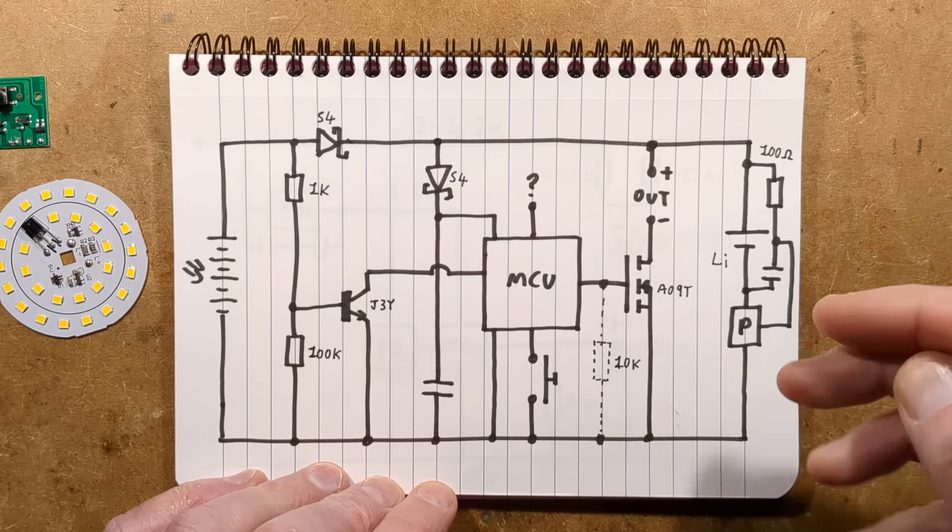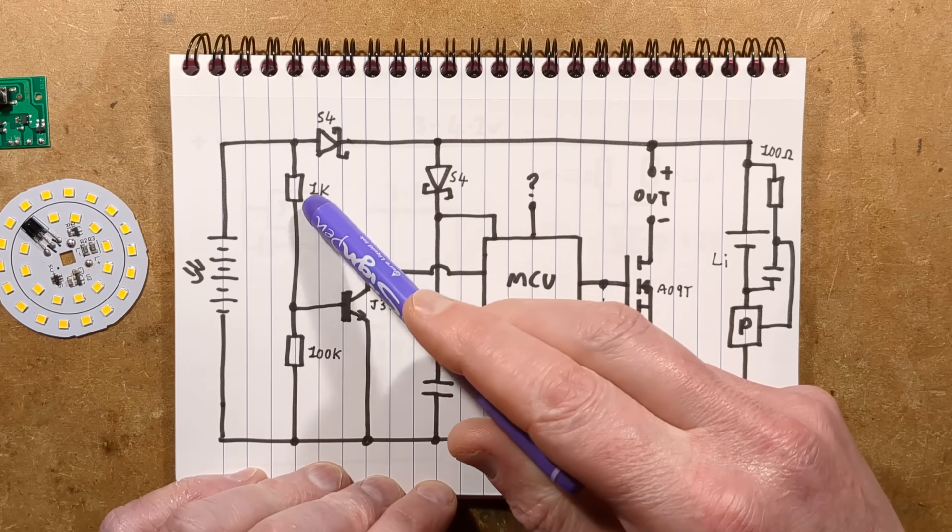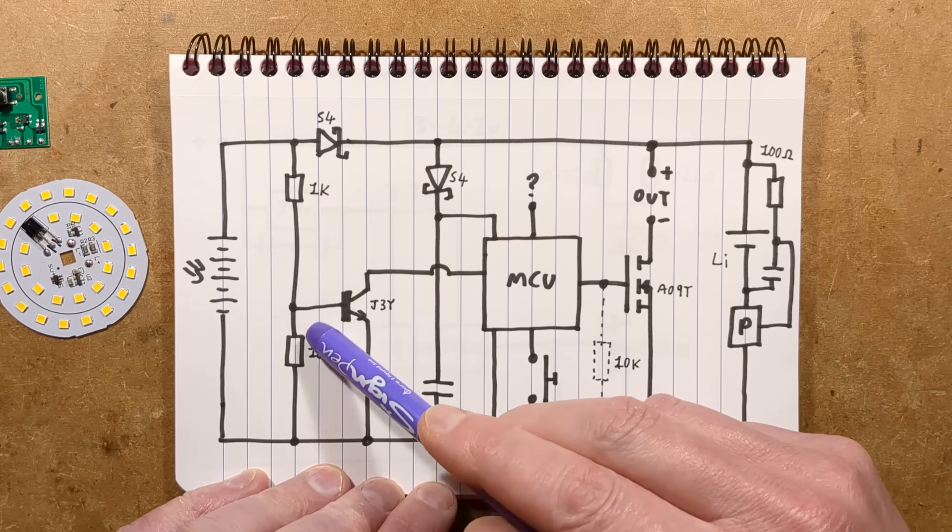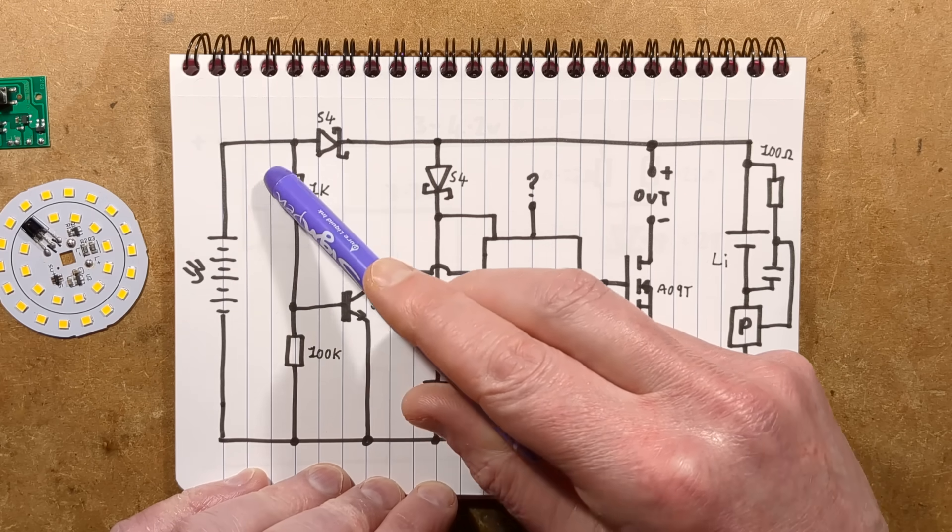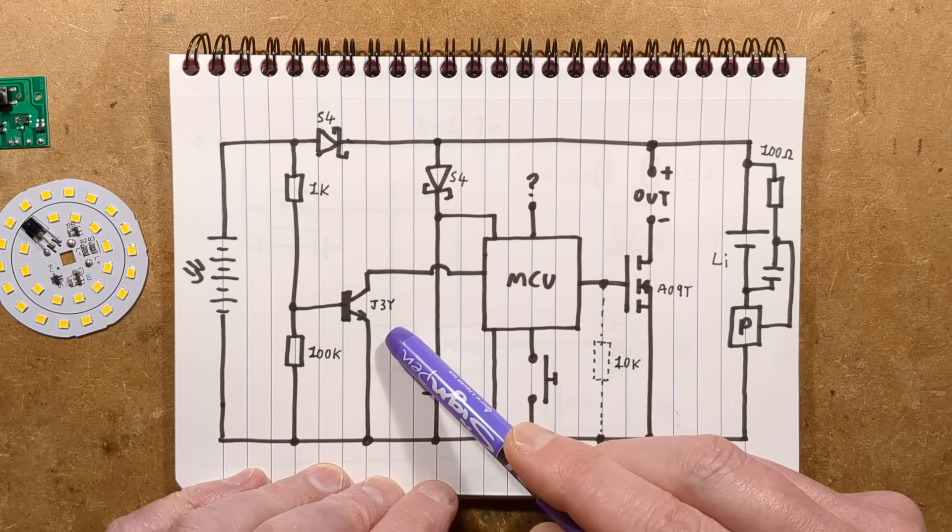There is the dusk sensing tap from the solar panel which has a 1k resistor and a 100k pull down resistor. And as long as the voltage on the solar panel is roughly 0.6 volts, it turns this transistor on, standard J3Y NPN transistor.